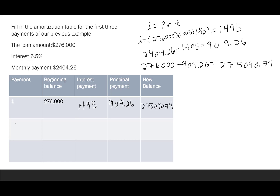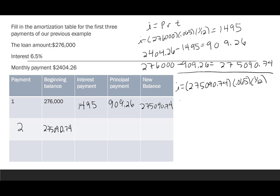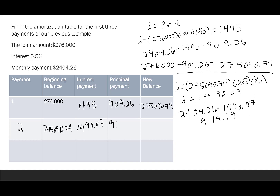Payment two: new balance is $275,090.74. Interest = $275,090.74 × 0.065 × (1/12) = $1,490.07. The interest went down a little as the balance decreased. Principal payment = $2,404.26 − $1,490.07 = $914.19. New balance: $275,090.74 − $914.19 = $274,176.55. Over time, interest decreases, principal increases, and the balance gets paid off.